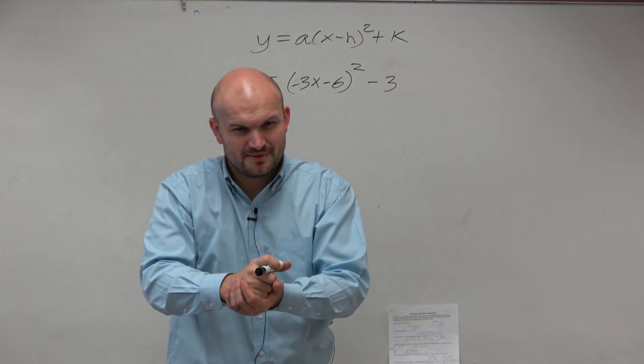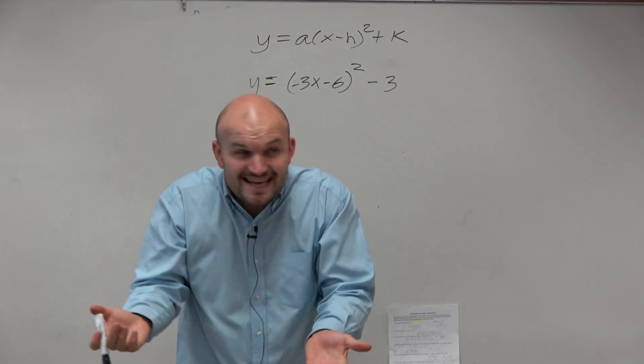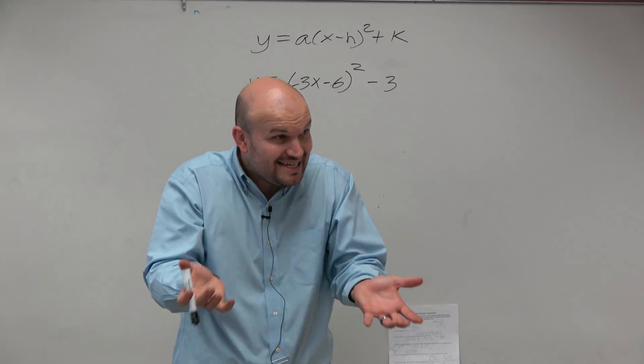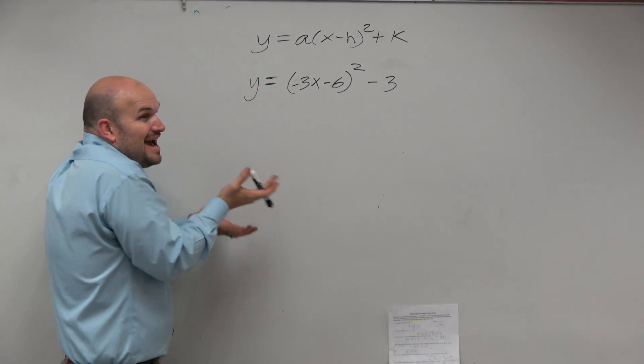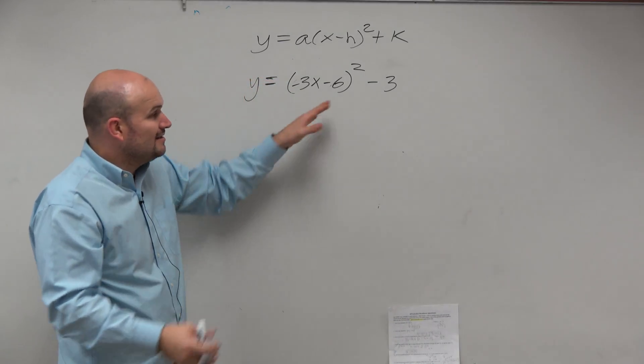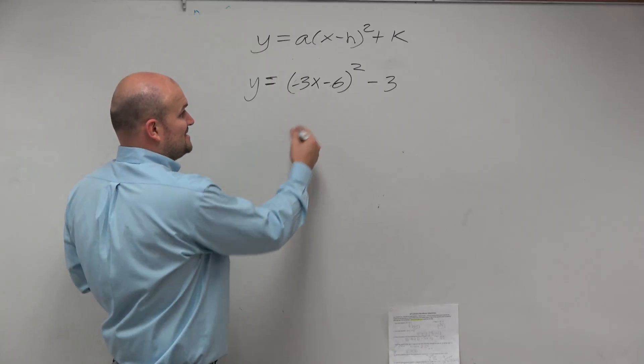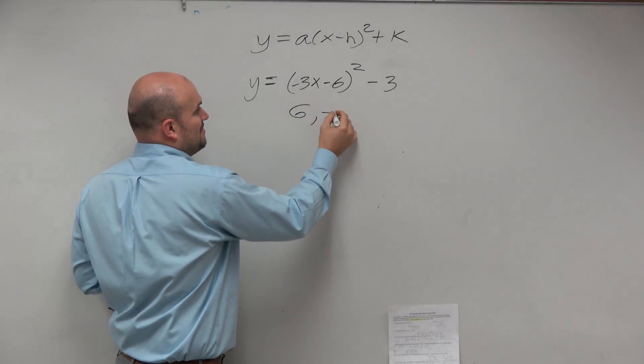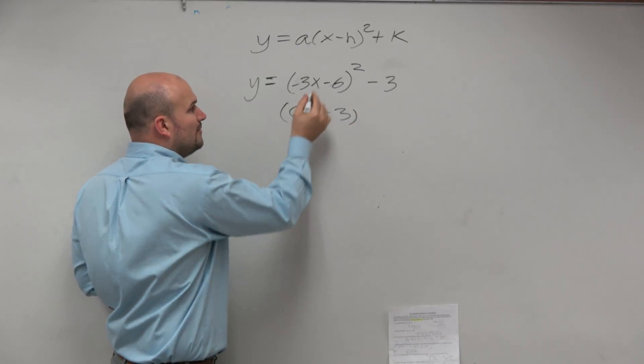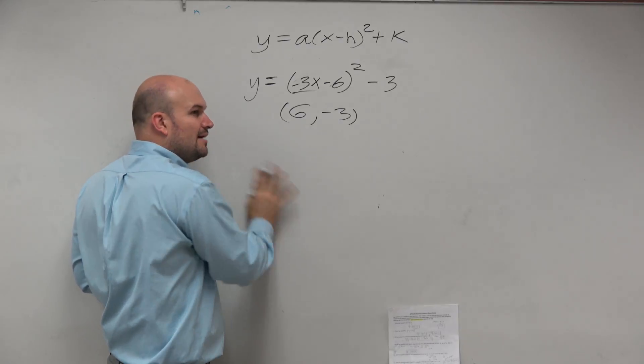What is it B said? Compress or stretch? B stinks, right? B stinks. B messes everything up, right? So everybody makes the mistake and says, oh, the vertex is 6, negative 3. No, we have this B. B messes everything up.